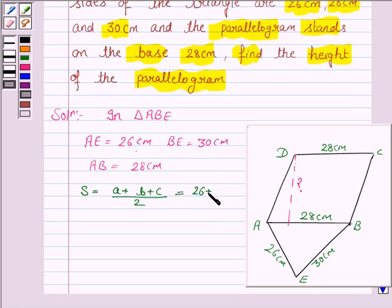It is 26 plus 30 plus 28 upon 2, which is equal to 42.